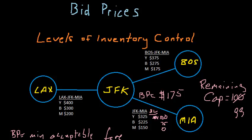Littlewood's rule tells us that we should accept a request if the fare we're getting with certainty from the customer standing in front of us is greater than the fare we expect to get if we save that seat for a higher fare customer that's going to arrive at a later time. Of course that higher fare customer has some probability of arriving associated with it.